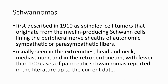Pancreatic schwannoma: the schwannoma was first described in 1910 as a Schwann cell tumor originating from myelin-producing Schwann cells binding the peripheral nerves of autonomic sympathetic or parasympathetic fibers. It is usually seen in the extremities, adnexa, mediastinum, and retroperitoneum, with fewer than 100 cases of pancreatic schwannomas reported in the literature to date.